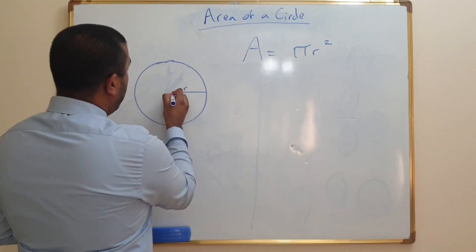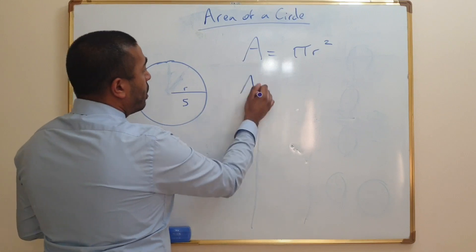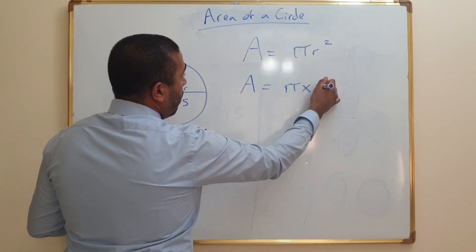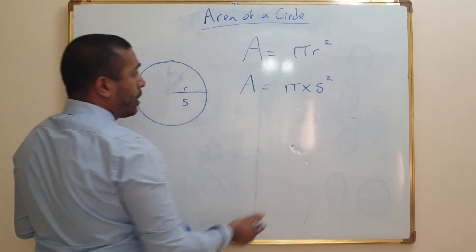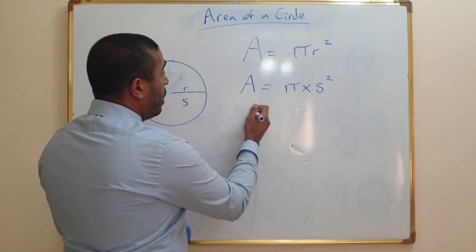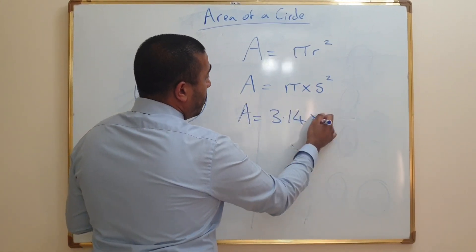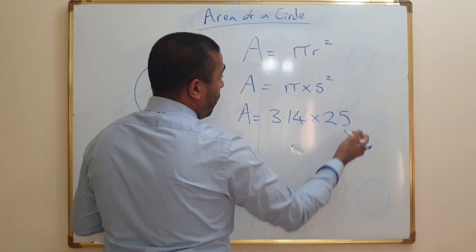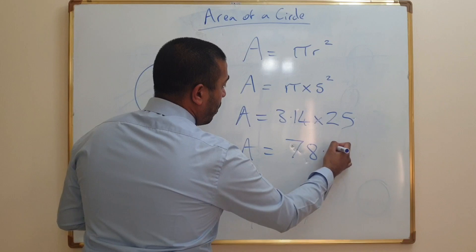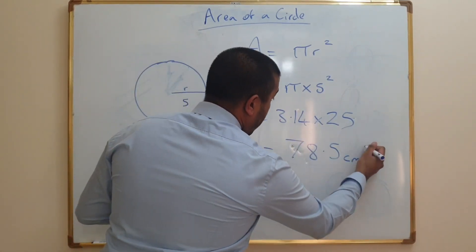Now let's say for example the radius in this case is 5. So the area is going to be pi times 5 squared. Now if you are using 3.14 for pi, which is also fine, then it's just going to be 3.14 times 25, which gives you an answer of 78.5. Don't forget to write centimeters squared because it is area.